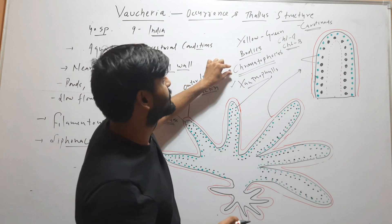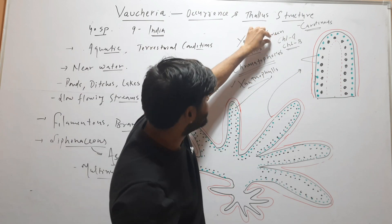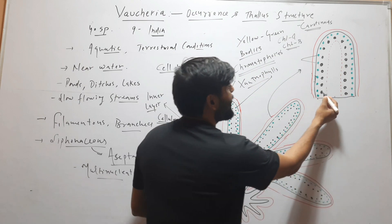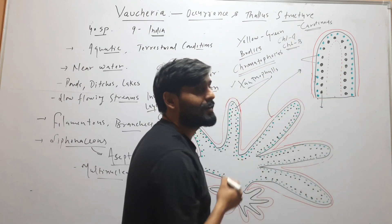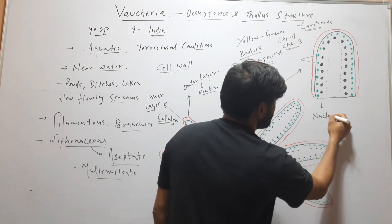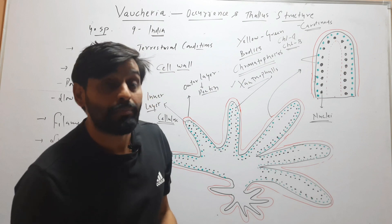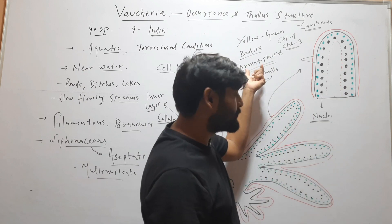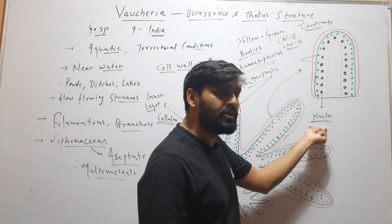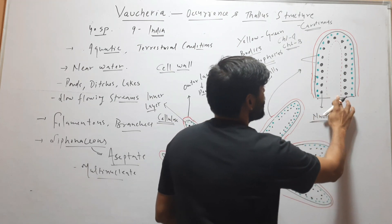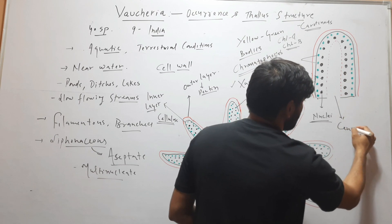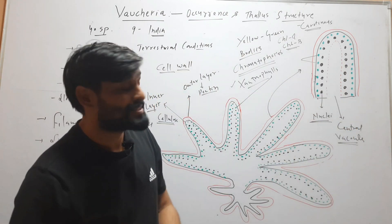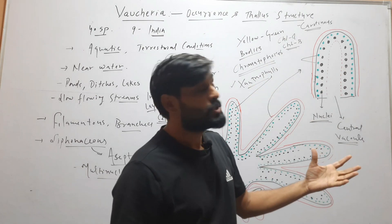These yellow-green colored bodies are chromatophores, and they contain the photosynthetic pigments chlorophyll a, chlorophyll b, and xanthophyll. Inner to these chromatophores you will find many dark-colored bodies — these are called nuclei, indicating a multi-nucleate condition. Inner to the nuclei is a large central vacuole present in the center of the filament.